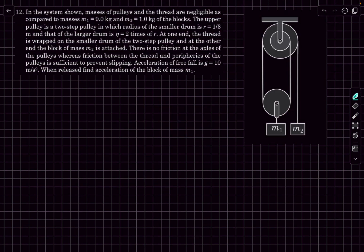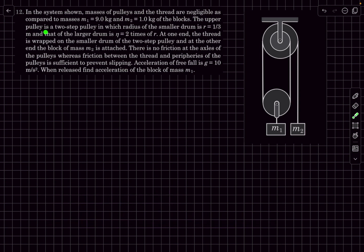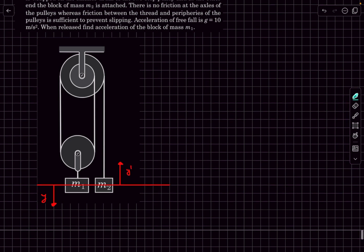Now let's move on to Check Your Understanding problem 12. Again we have a system of pulleys with negligible thread and pulley masses. The upper pulley is a two-step pulley where the smaller drum has radius r and the larger drum has radius 2r, so the radii are in the ratio 1:2. One end of the thread wraps on the smaller drum and block M2 is attached at the other end. We have to find the acceleration of block M1, where M1 = 9 kg and M2 = 1 kg. M1 goes downward by Y and M2 goes upward by Y_prime; we need to find Y in terms of Y_prime using string constraint.